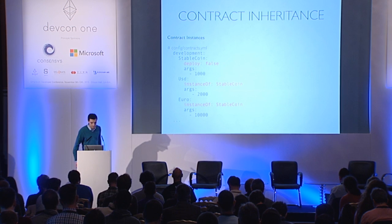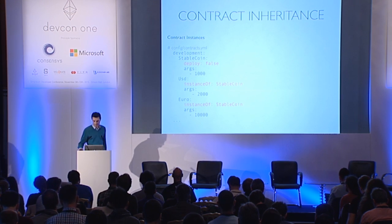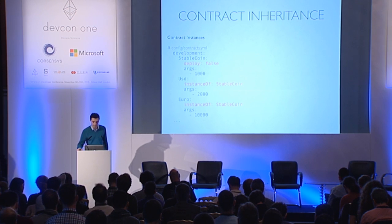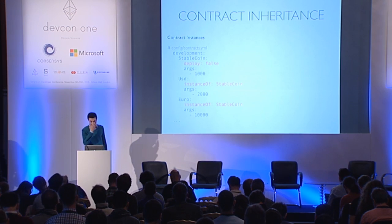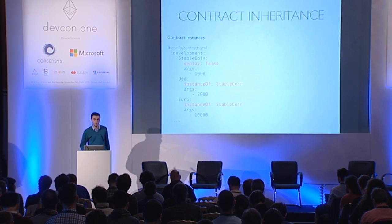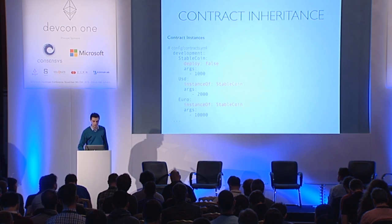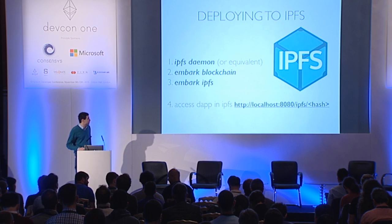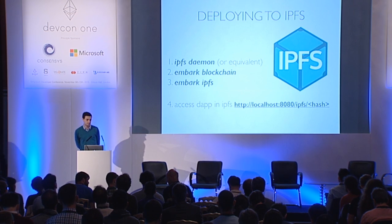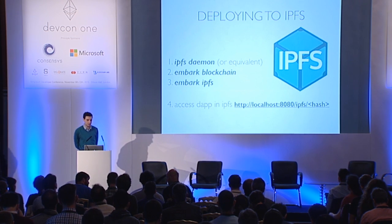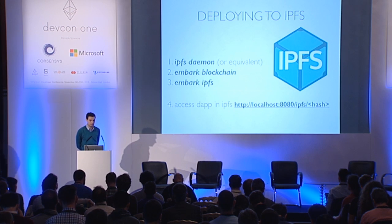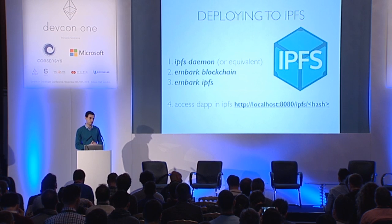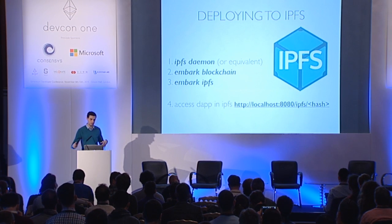You can do contract inheritance. If your USD and Euro contracts depend on the StableCoin contract, all you need to do is specify that USD and Euro are instances of StableCoin. Another nice feature of Embark is IPFS support — by simply installing the IPFS daemon, running 'embark blockchain' and 'embark ipfs', it will nicely package your app and deploy it to IPFS, accessible on localhost:8080.